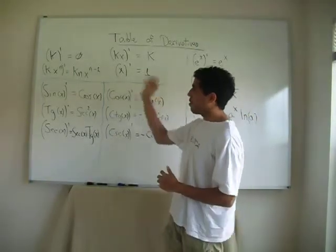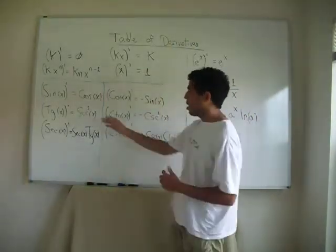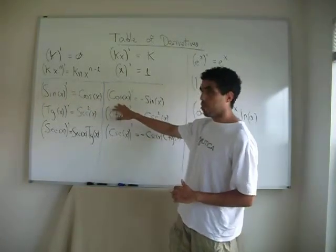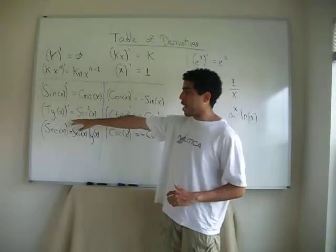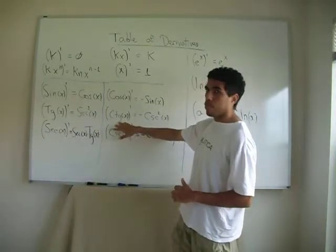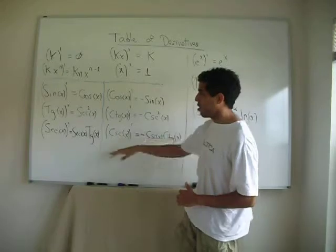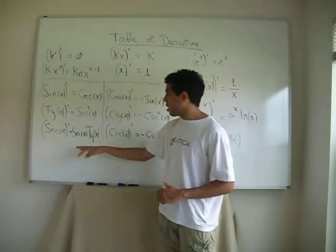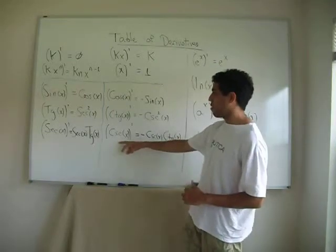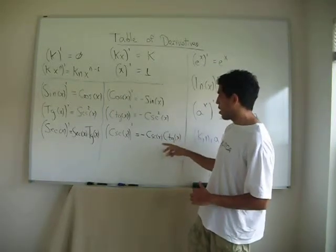Here we have the trigonometric derivatives. Sine derivative is cosine. Cosine derivative is negative sine. Tangent derivative is secant squared. Cotangent derivative is negative cosecant squared. Secant derivative is secant times tangent. Cosecant derivative is negative cosecant cotangent.